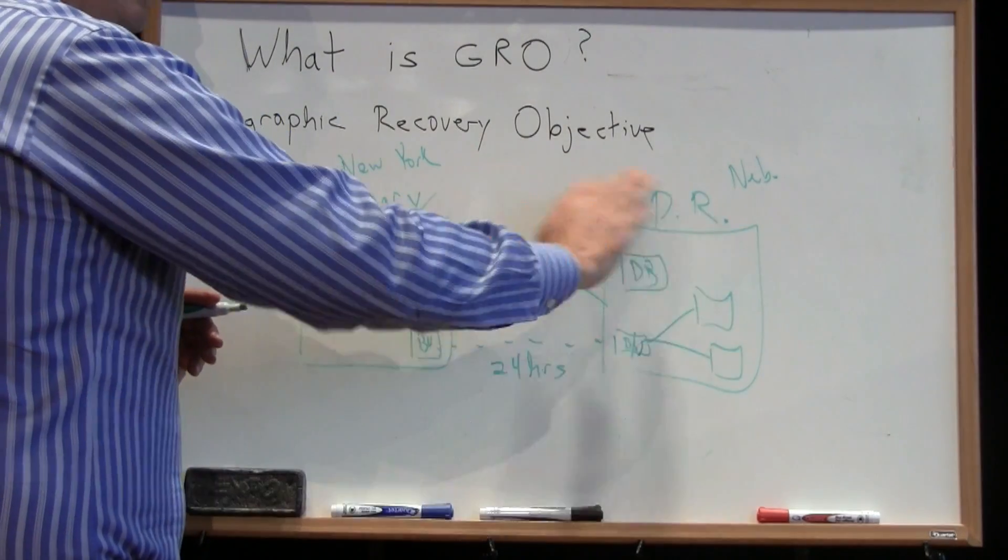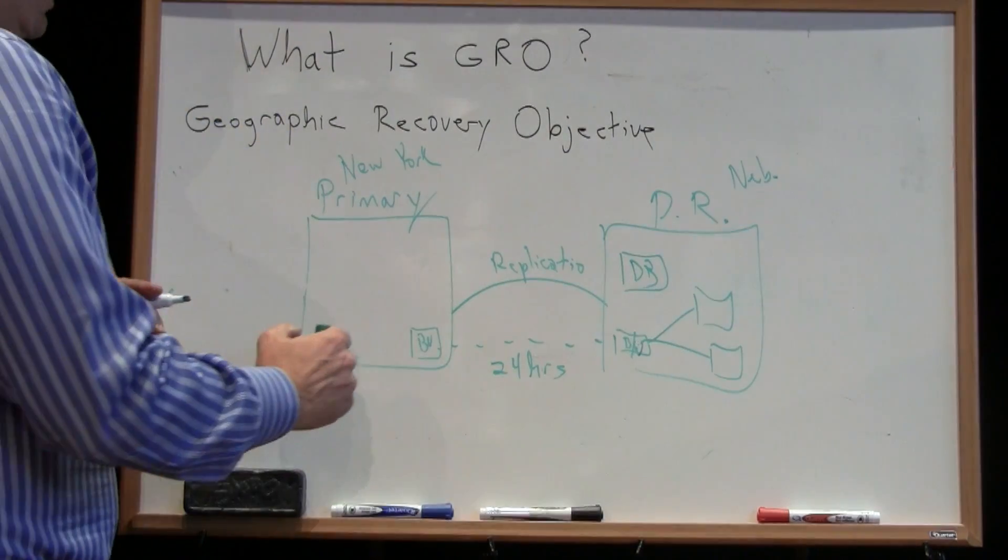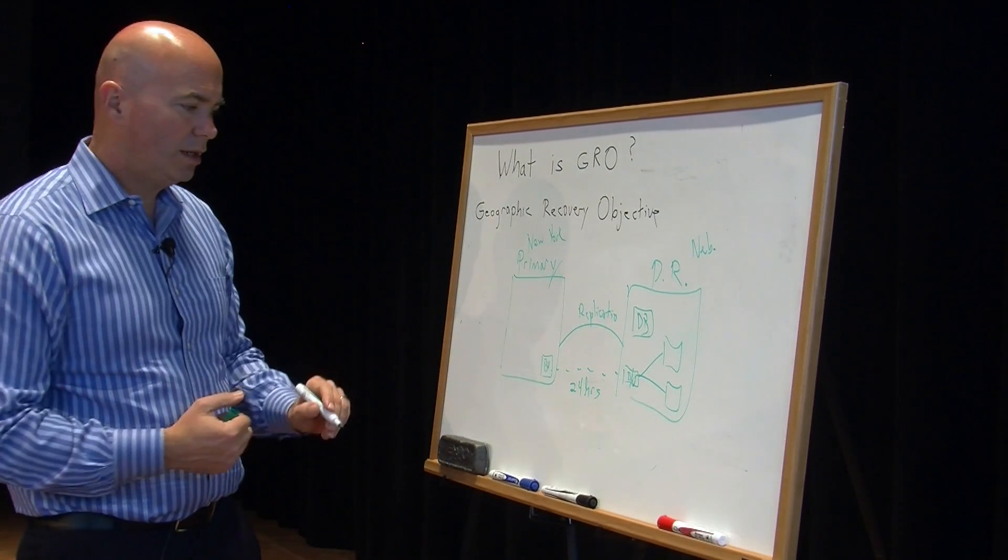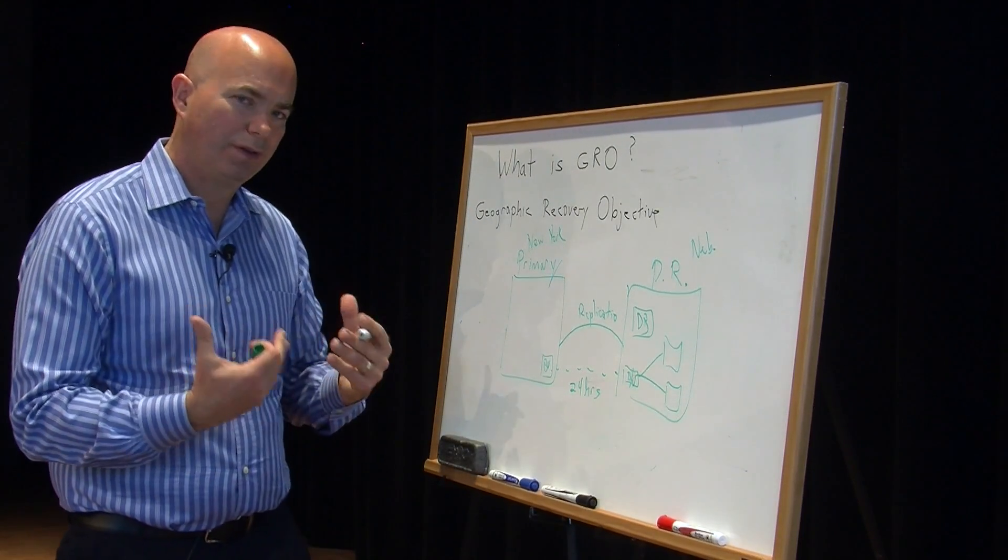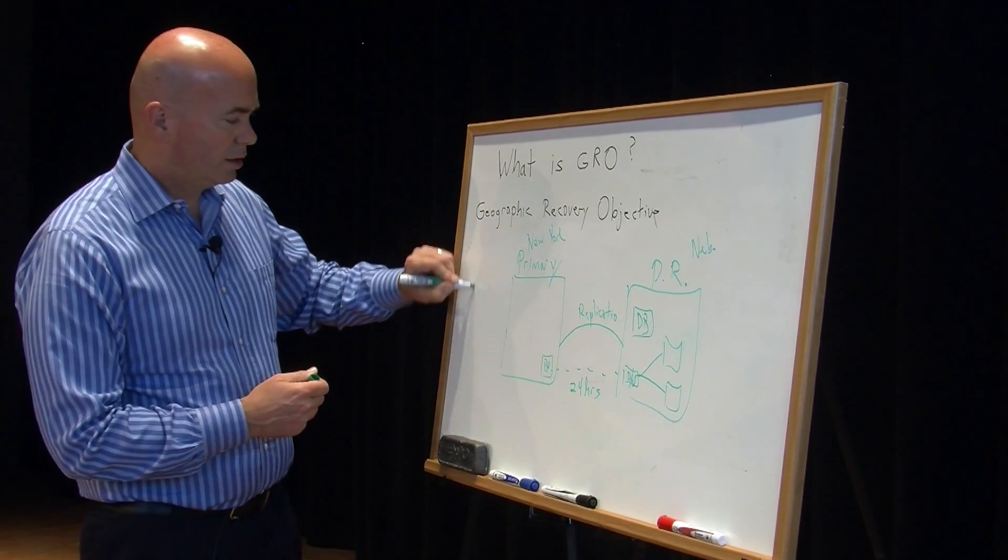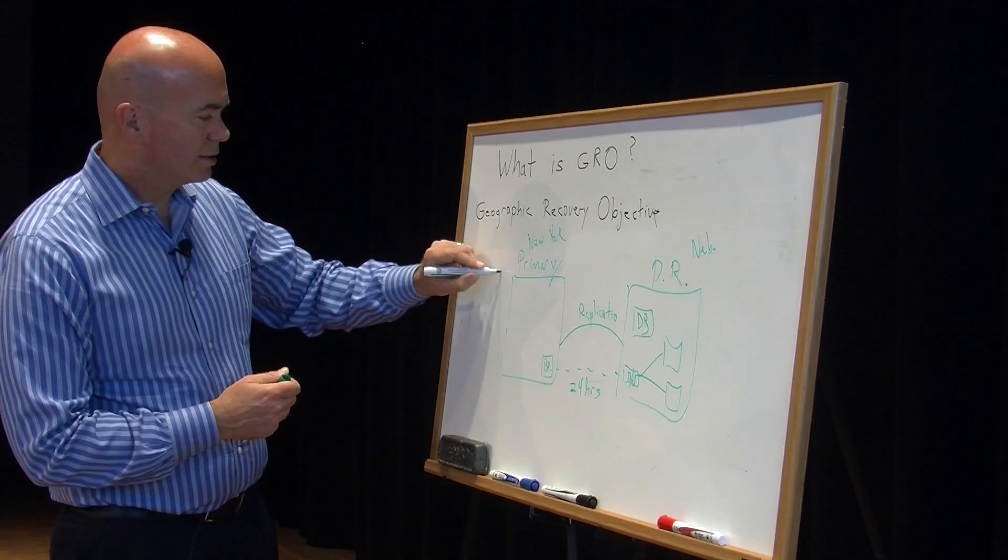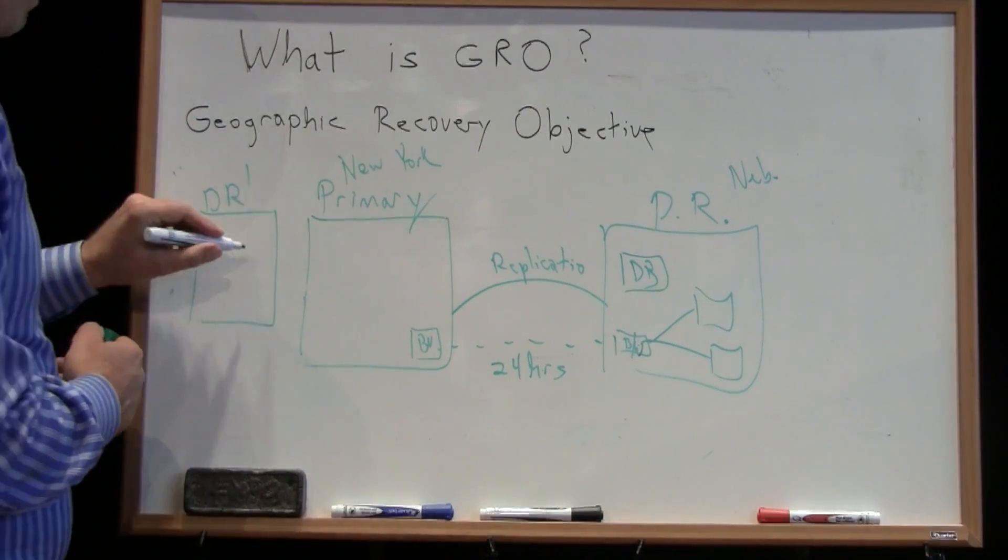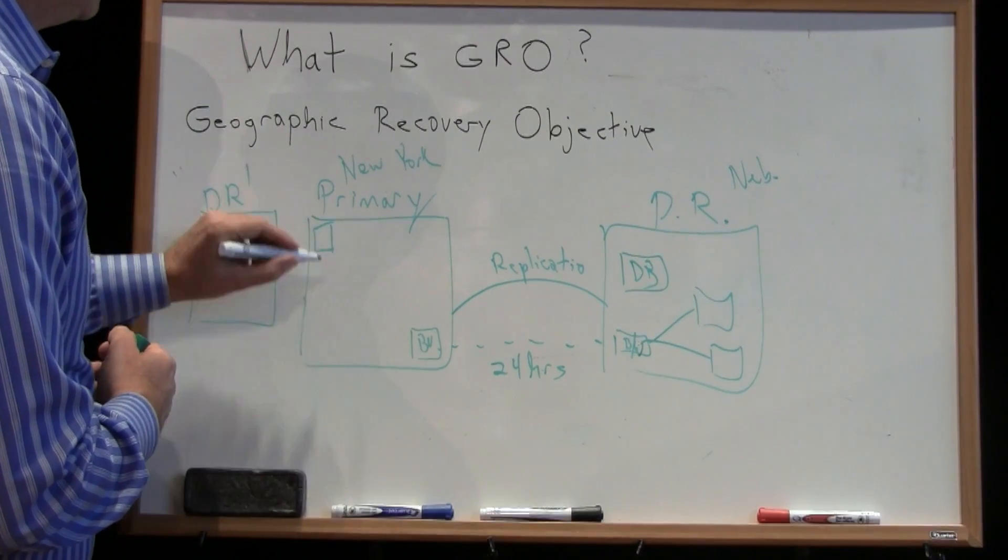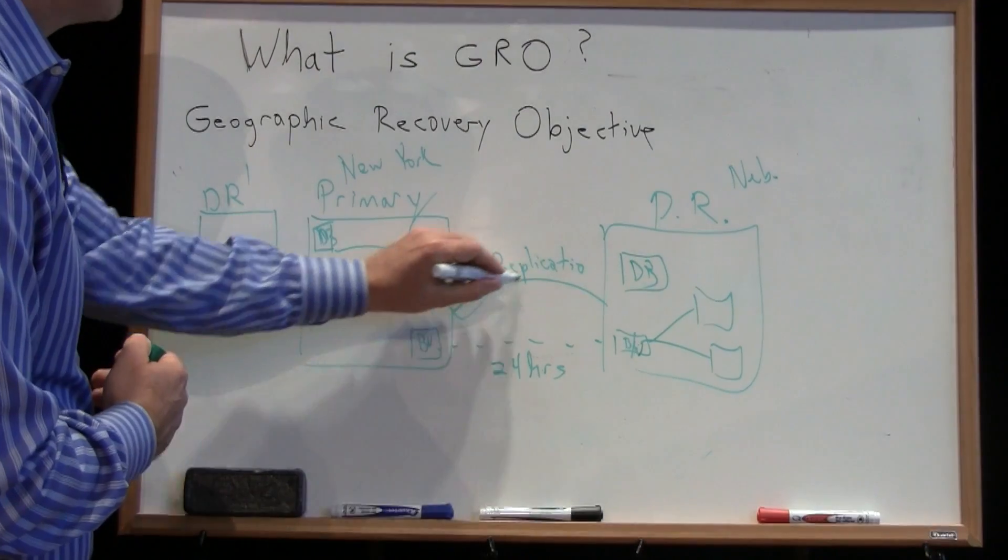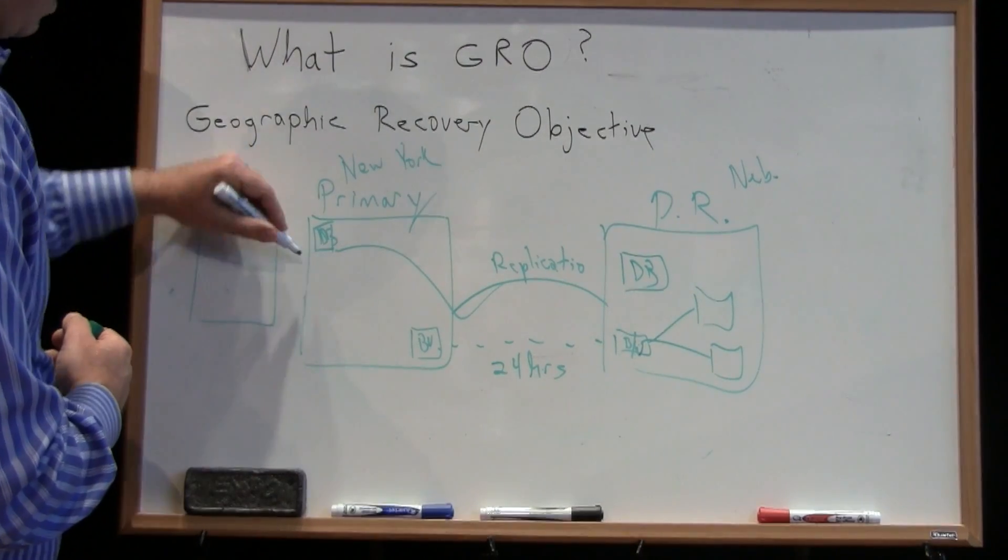Now the problem is we do have a distance issue here as well. And so if I want this database in sync, I can't do that. So in many environments, especially in very mission critical situations, we'll have an intermediary site to replicate to, we'll call it DR prime. And only a few applications will go there. So this database normally is replicating over there.